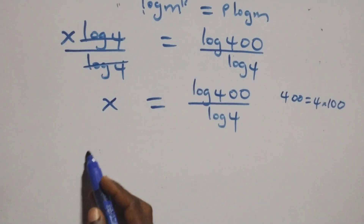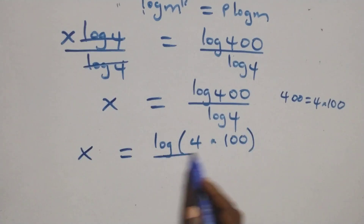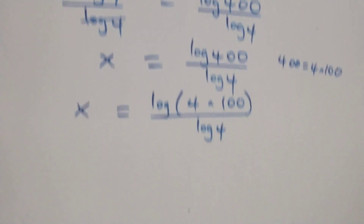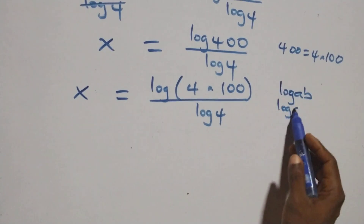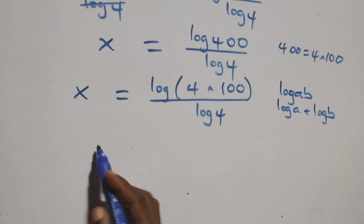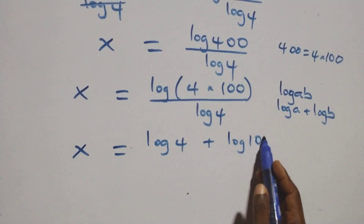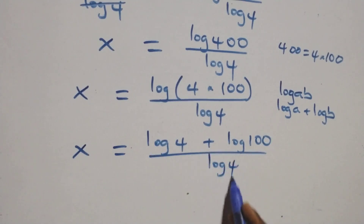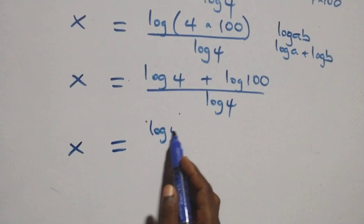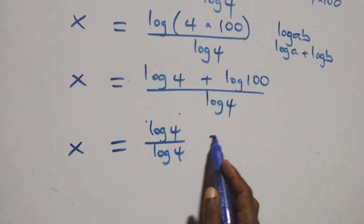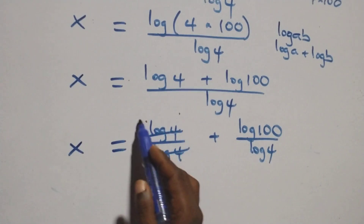What we have here becomes x equals log(4 times 100) over log 4. This follows the law of logarithm: log(a times b) is the same thing as log a plus log b. So here we have x equals log 4 plus log 100, all over log 4. We separate this into two fractions: x equals log 4 over log 4, plus log 100 over log 4. Here log 4 cancels with each other, leaving 1.